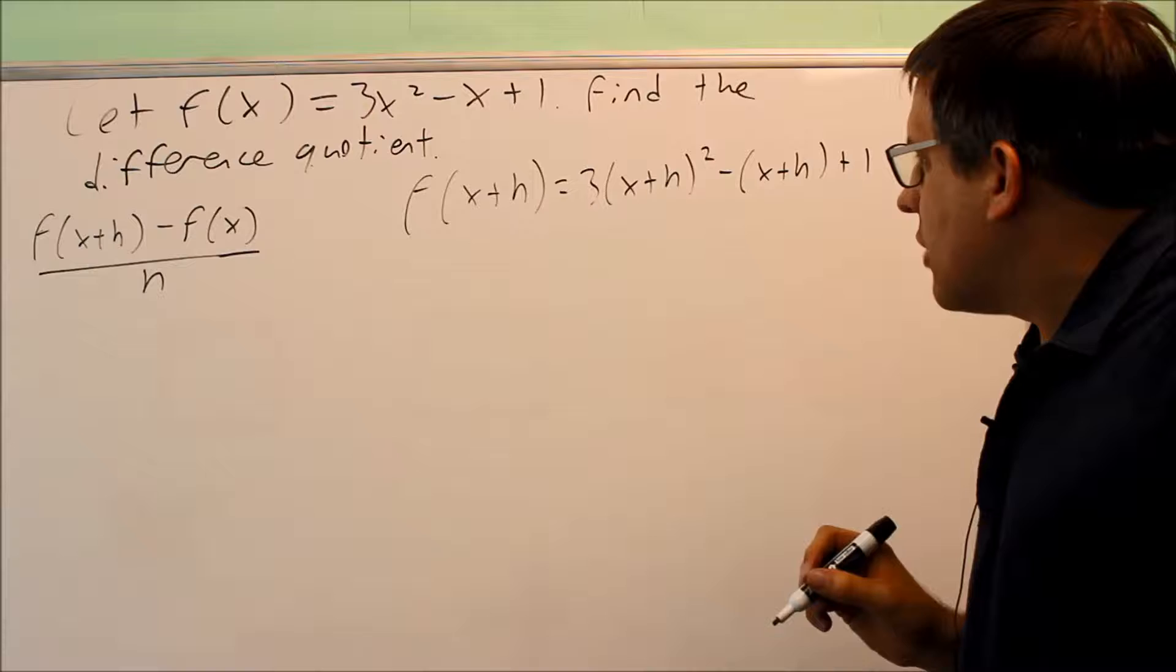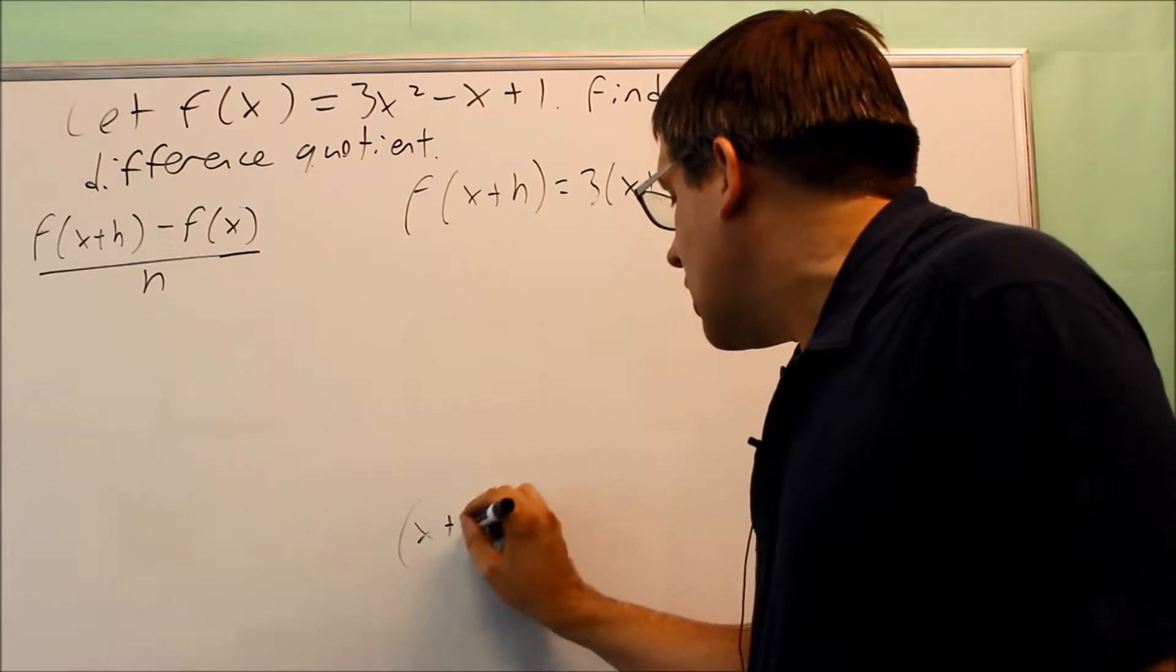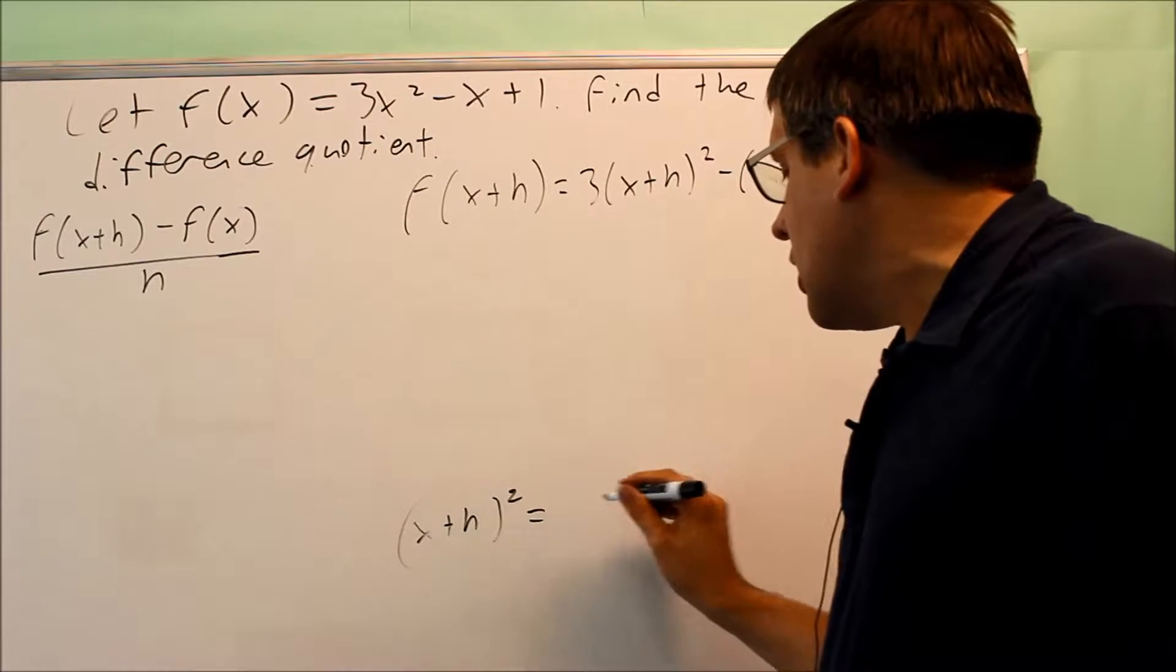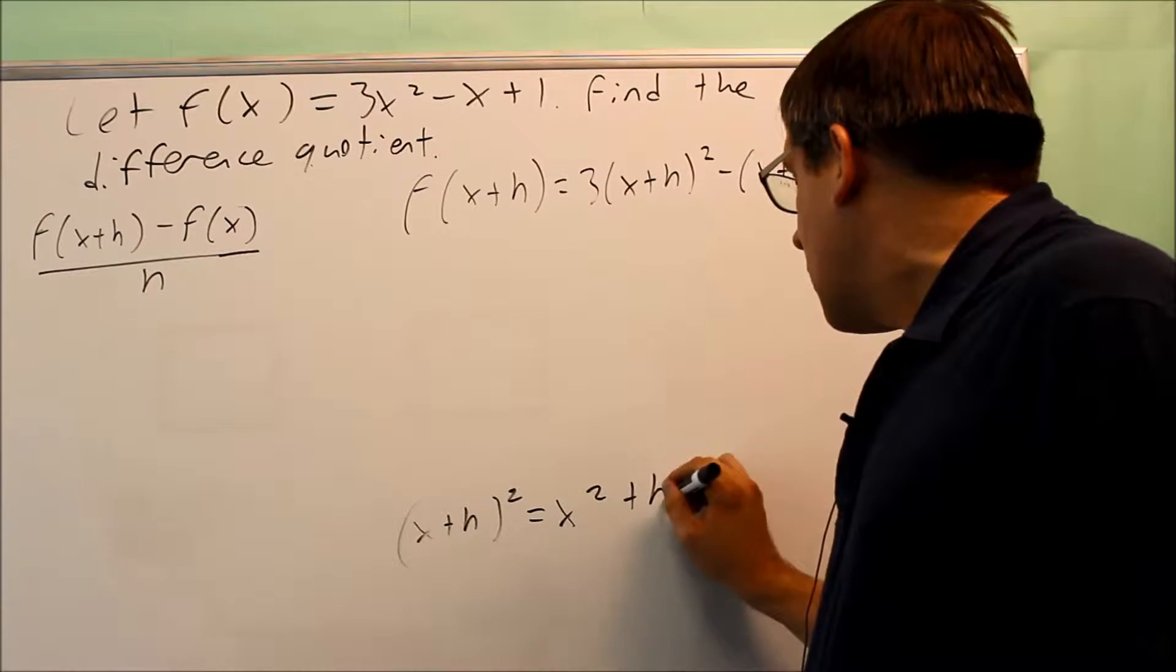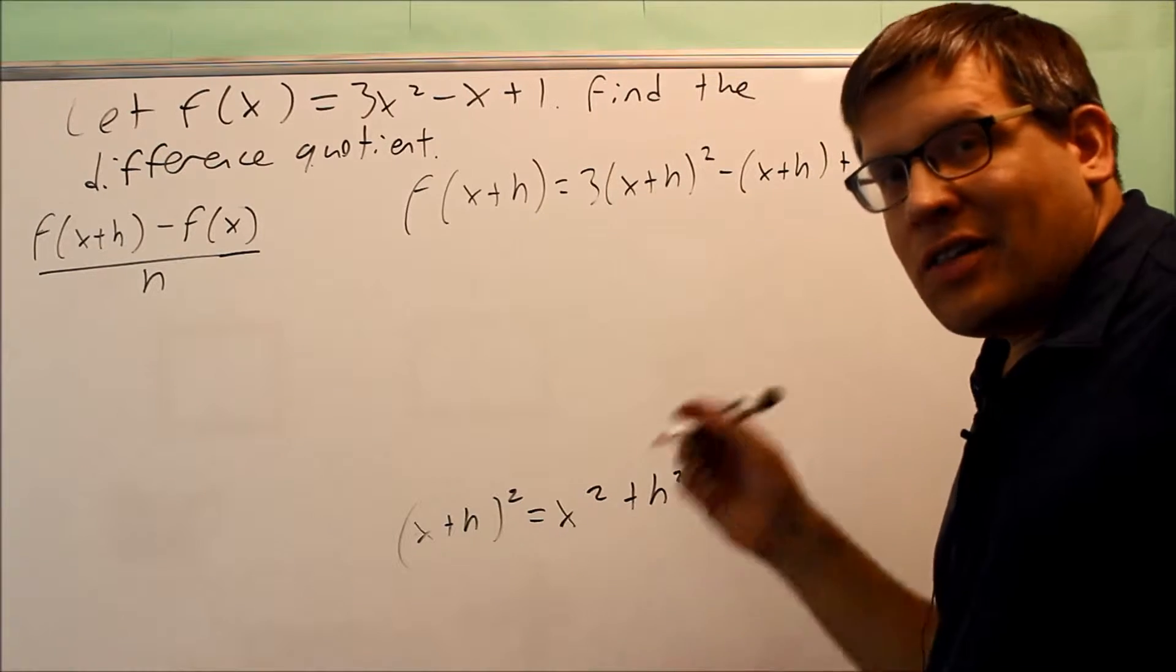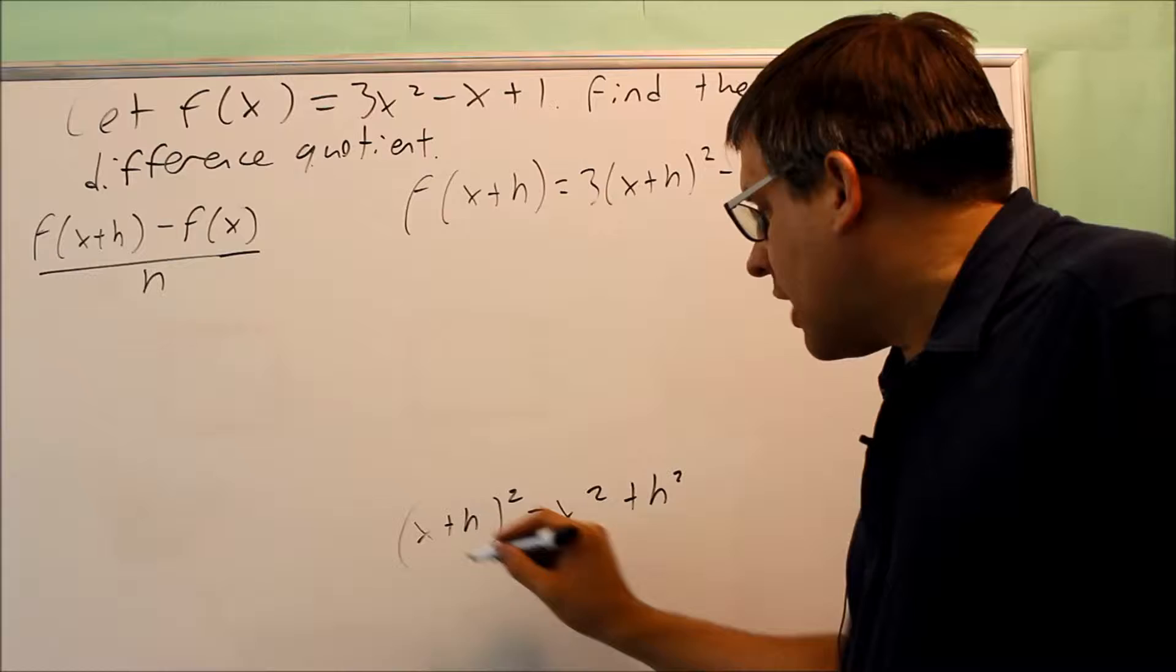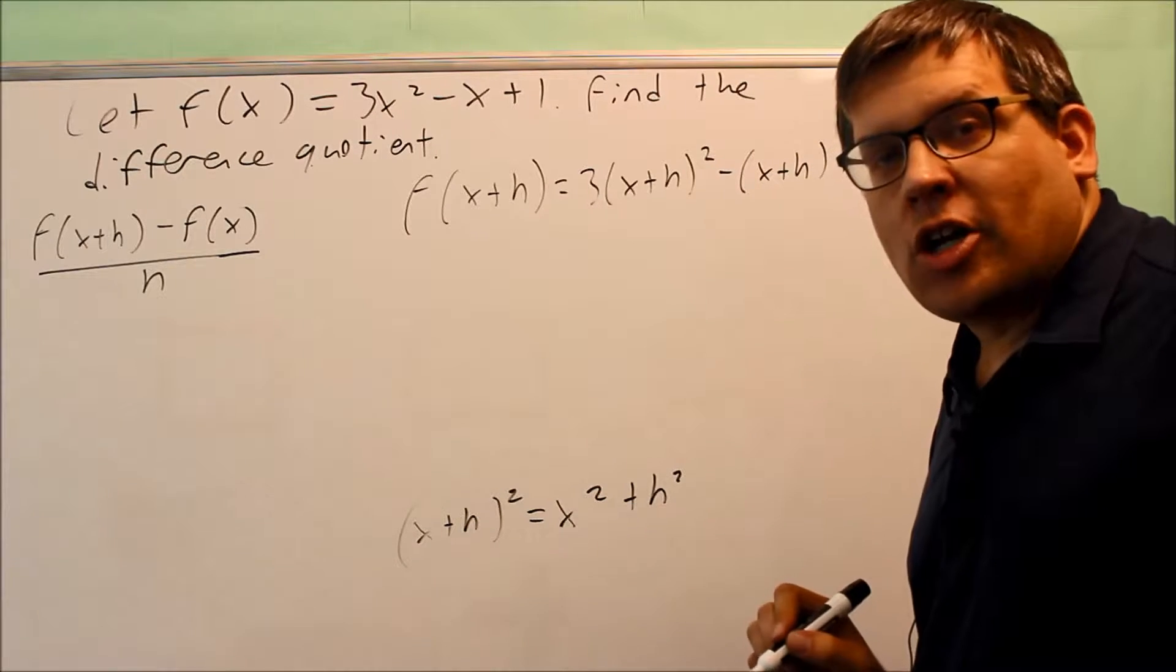Well how do we do x plus h squared? Well the common mistake that I see is you'll see this done. Distribute the square, you get x squared plus h squared. That's not correct because the square, you're not allowed to distribute that if you have a plus sign in between.